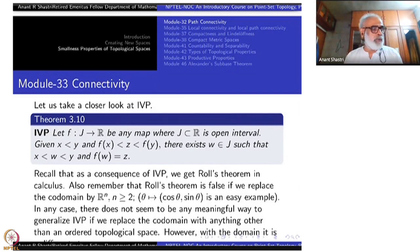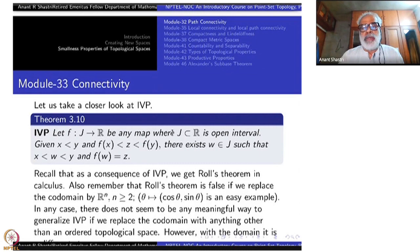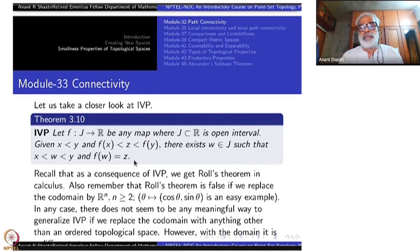Let us take a closer look at it, which is very relevant to the concept that we are trying to develop here. I am just recalling it; I am not going to prove the Intermediate Value Theorem. Let F from J to R be any map where J is some open interval. Given x less than y and F(x) less than some point z less than F(y), there exists a w inside J such that w is between x and y and F(w) equals z. That is the Intermediate Value Theorem.